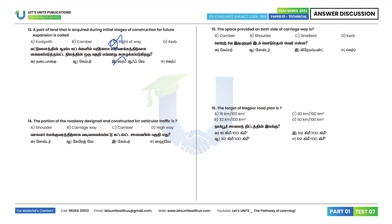14th question: The portion of a roadway designed and constructed for vehicular traffic is called carriageway. Option B is the correct answer. 15th question: The space provided on both sides of the carriageway is called a shoulder. Option B is the correct answer.